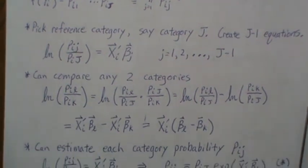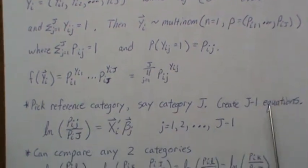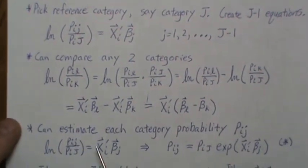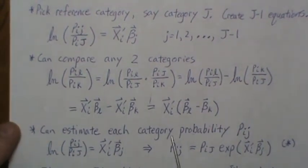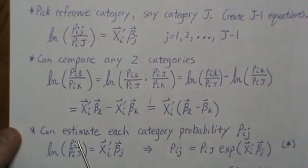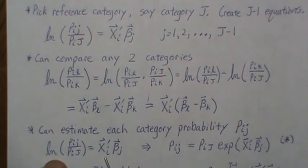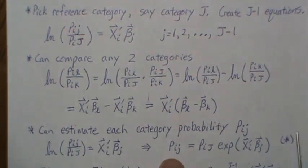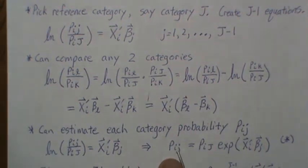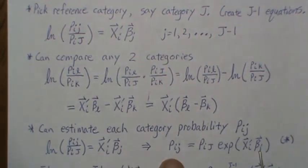So modeling it like this, we can technically compare any two categories against each other with this relationship. Once we know the betas, we can also, instead of comparing against the reference or comparing each, we can also estimate the probability of each category like this. So the log of pi j divided by the reference probability is this linear relationship. Now we can exponentiate both sides and then multiply up the reference category probability like this. And so this we're going to call star, because this is how we estimate it, but we have to derive an estimate for this.